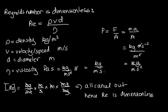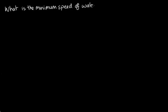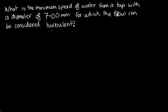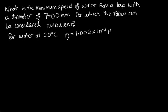Let's solve a problem now. What is the minimum speed of water from a tap with a diameter of 7.00 millimetres for which the flow can be considered turbulent? We're told that for water at 20°C, the viscosity is 1.002 × 10⁻³ pascal seconds, and the density is 998.2 kilograms per metre cubed.